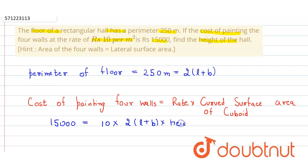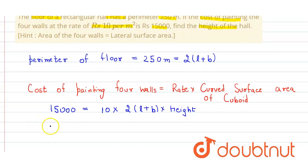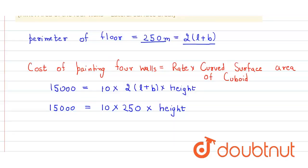So we just simply write: 15,000 = 10 × 2(l + b) × height. The value of 2(l + b) equals 250, so we replace it: 15,000 = 10 × 250 × height.